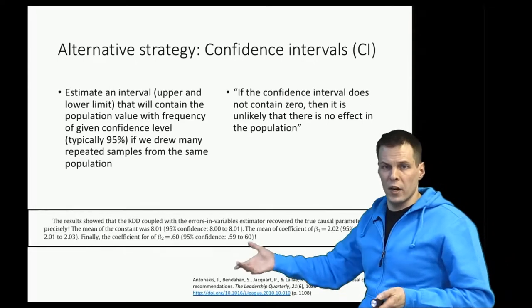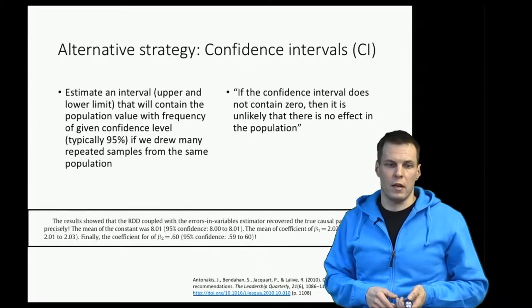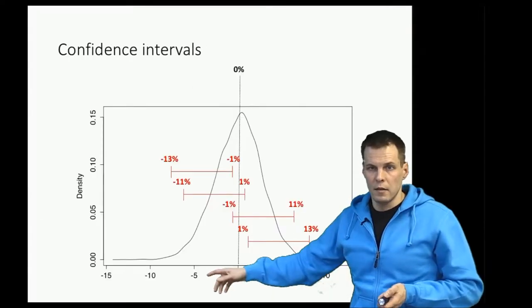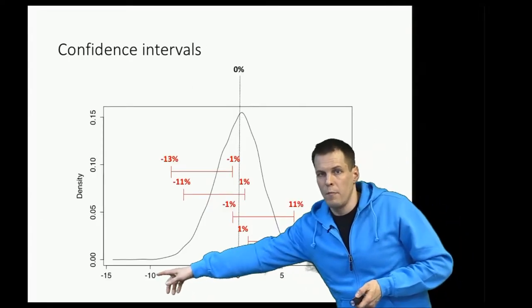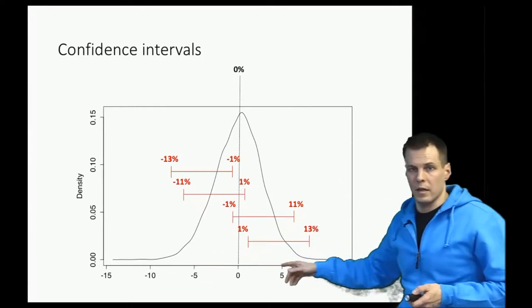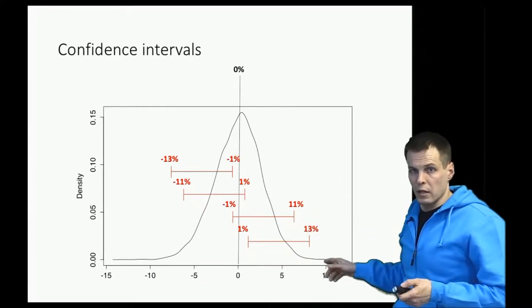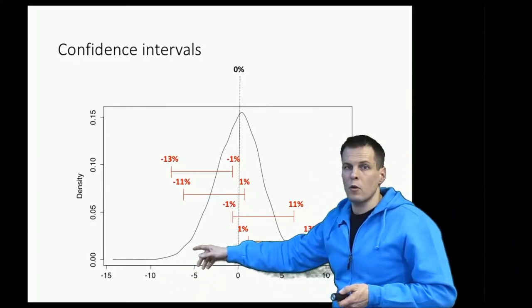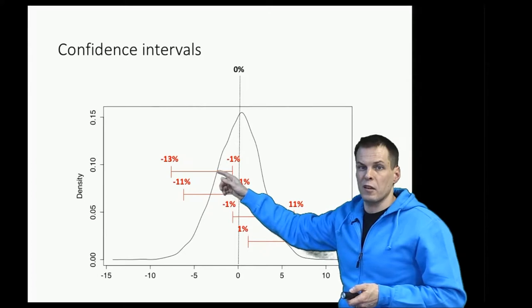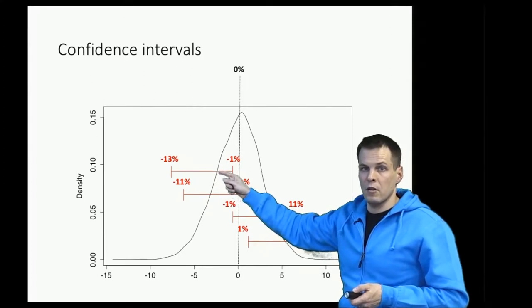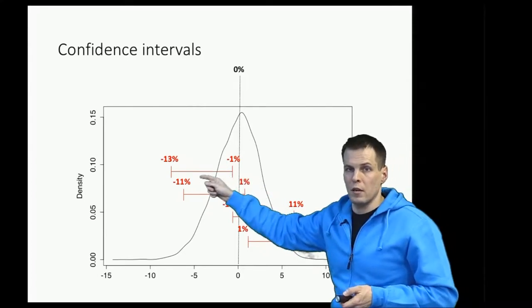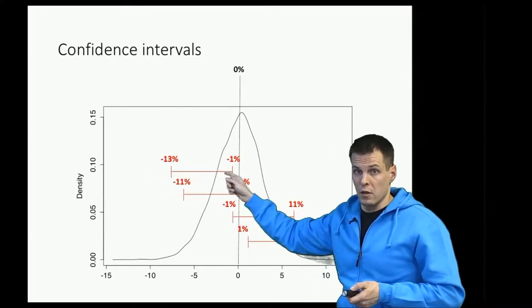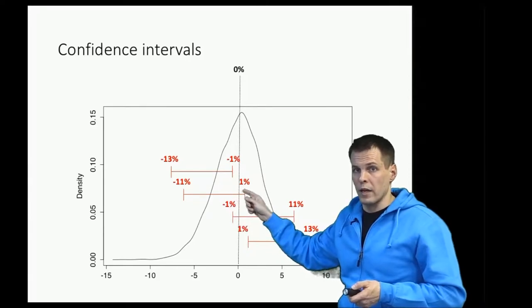To understand the confidence interval better, it's useful to understand it in the framework of the previous example. We had the difference between men-led companies and women-led companies that occurs by chance only. Sometimes we get a large difference, sometimes we get a small difference, and these confidence intervals are constructed around an estimate. Let's say an estimate is here, then the interval could be here. This interval would not contain the population value. The population value of zero is above the interval.